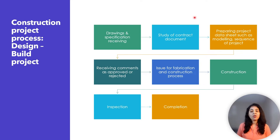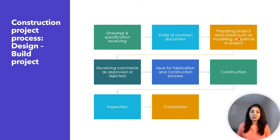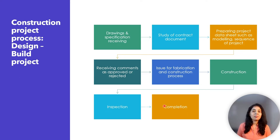The structural steel fabricator obtains a set of drawings and specifications pertaining to the portion of the project they are interested in. They study the contract documents and prepare their own project data sheet, such as the modeling sequence of the project. If more information is needed, they request it from the owner. The prepared data sheet is submitted to the owner and received comment as approved or rejected. After approval, it is issued for fabrication and construction. Actual construction then starts with inspection by the owner's representative and completion of the project.